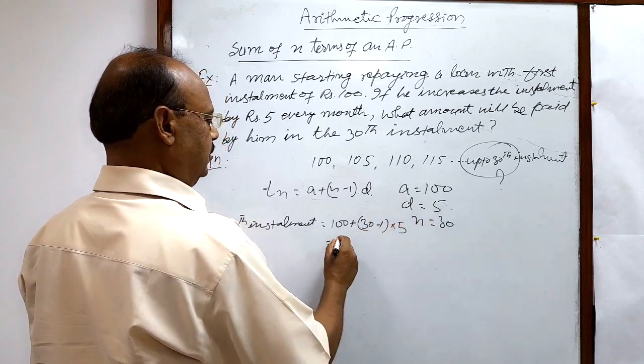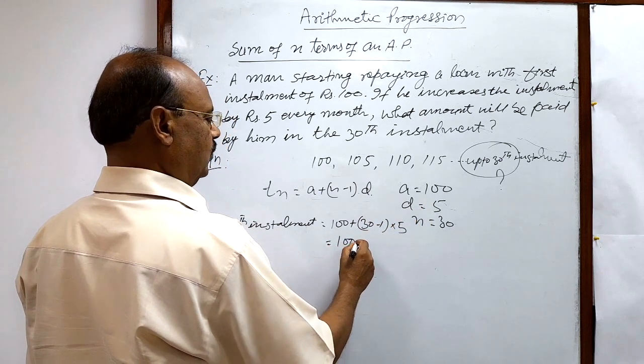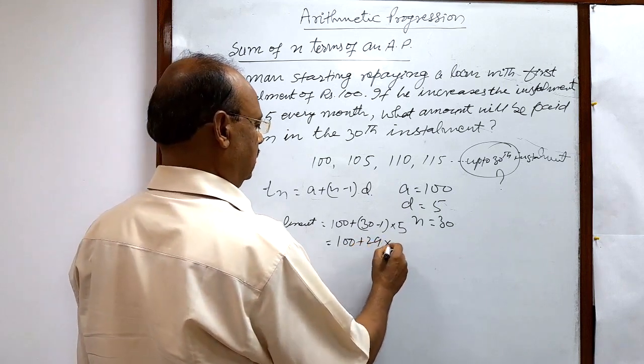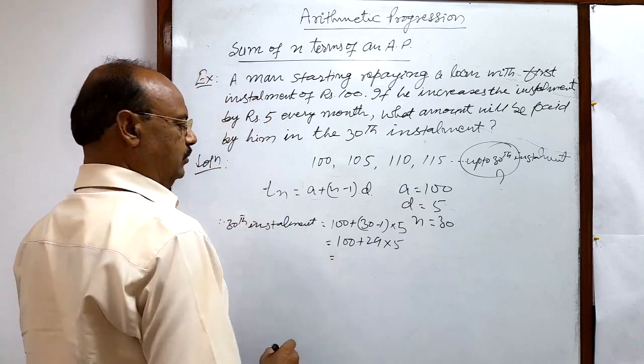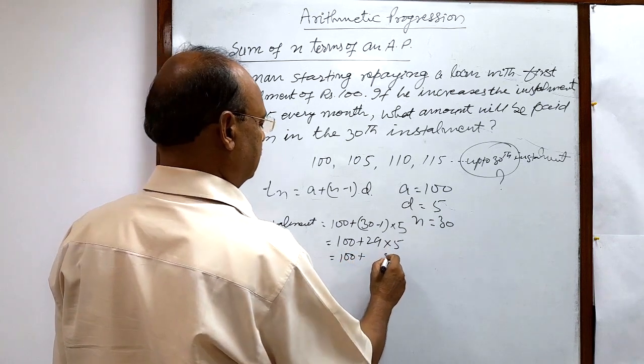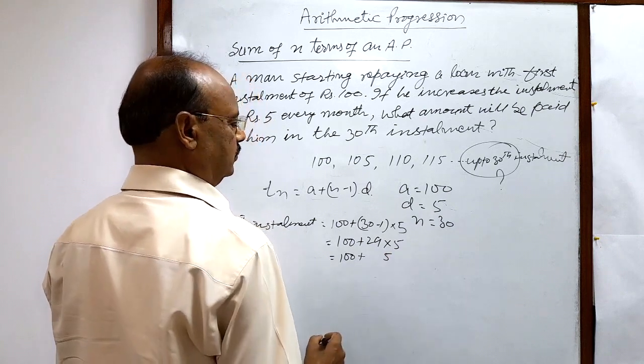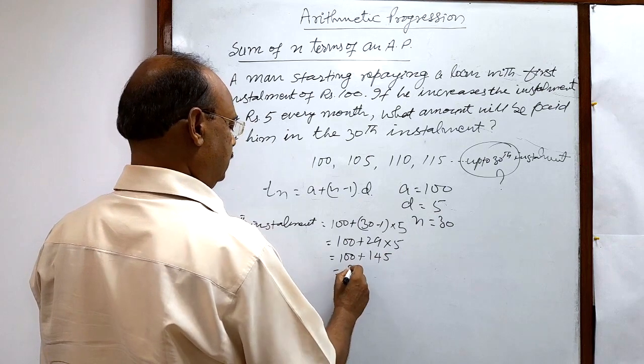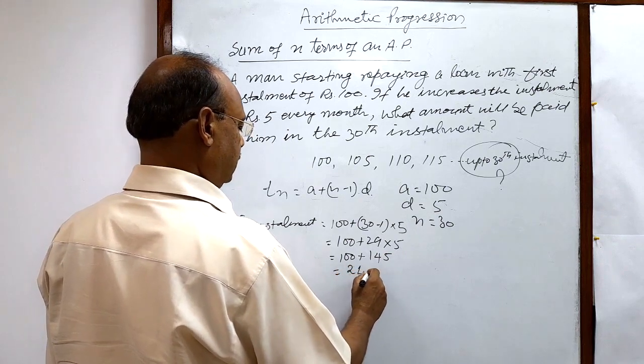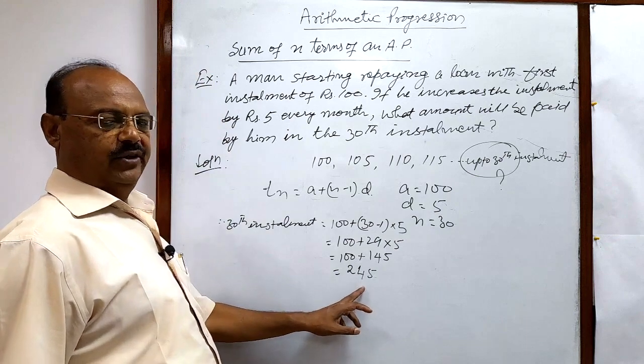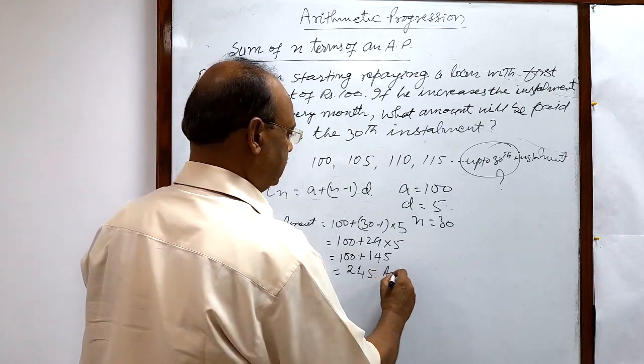Let us solve it: 100 plus 29 into 5. This is equal to 100 plus 145, and this is equal to 245. So the 30th installment is 245, and this is the answer.